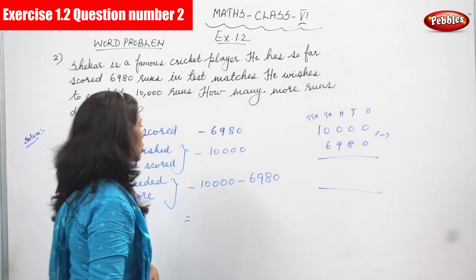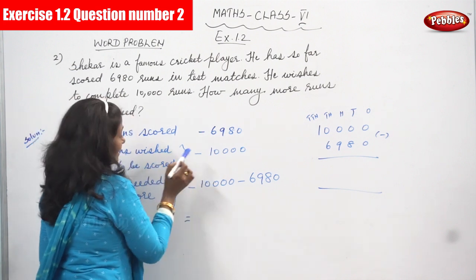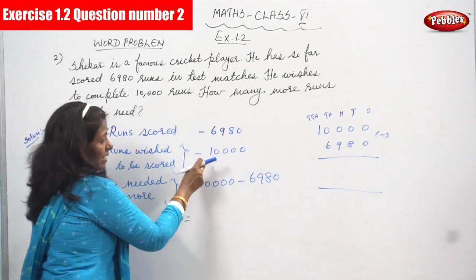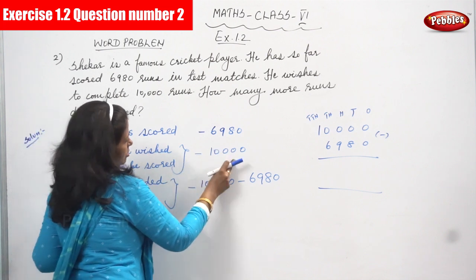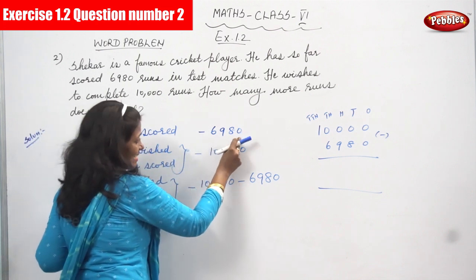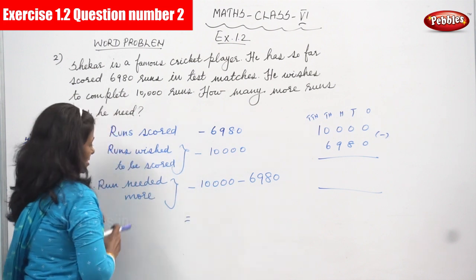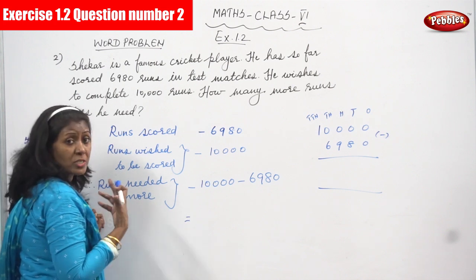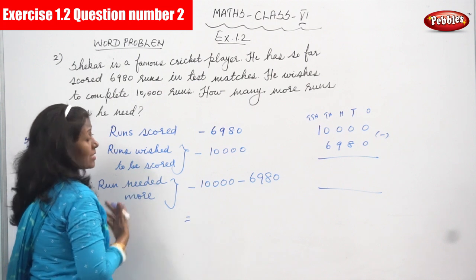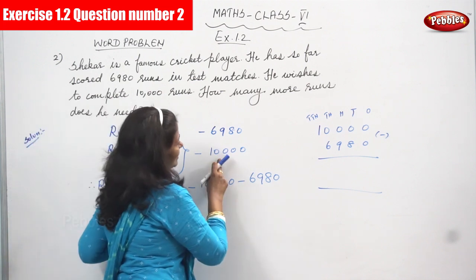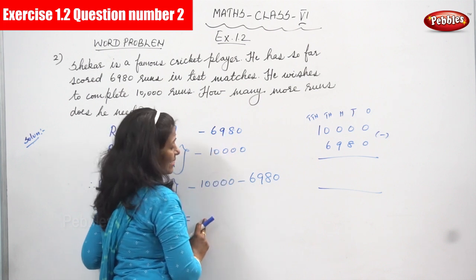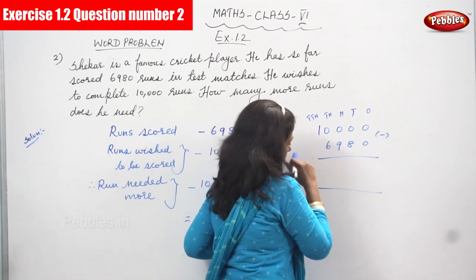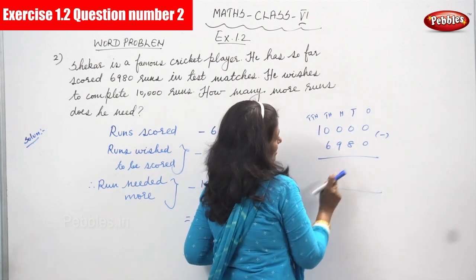So what are you going to do? Run wished to be scored is 10,000 — that is the greater number, that is his wish and ambition. But he already scored 6,980 runs. Therefore, run needed more — so from 10,000, you have to subtract 6,980. That is what I have written here: 10,000 minus 6,980.